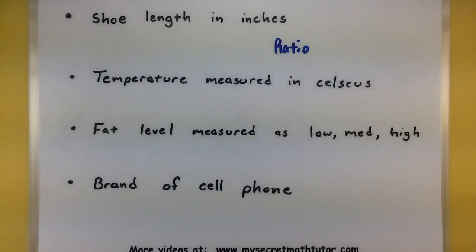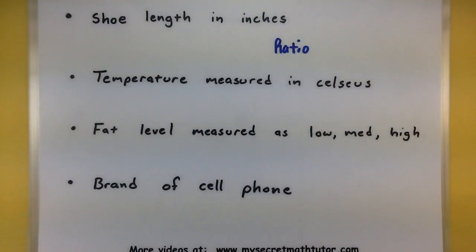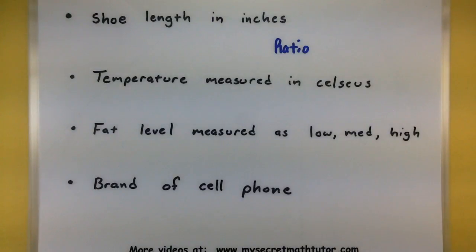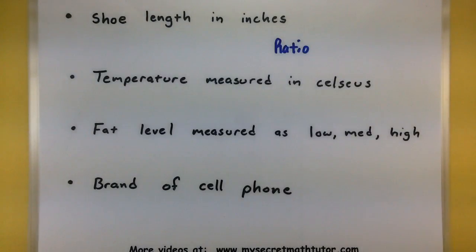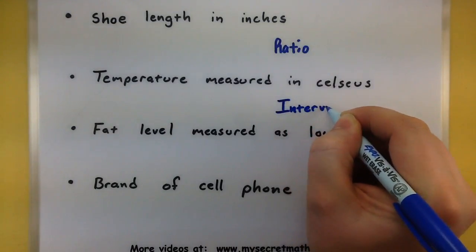Temperature measured in Celsius. This can definitely be ordered — I have my colder days and my warmer days. Differences in temperature make a difference: if I see a temperature at 50 degrees and another at 30 degrees, it's gone up by 20 degrees and that means something. Does zero correspond to none of the value? That doesn't make sense — I can have a temperature of zero degrees, but does that mean there's no temperature? No. I could even go into negative temperatures on the Celsius scale. Zero in that instance just corresponds to where water freezes, not a lack of temperature. So I'll put this at the interval level.